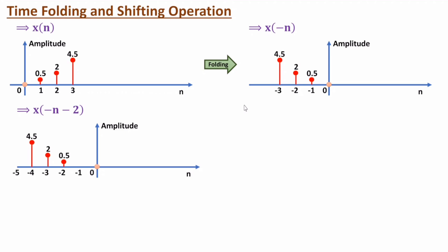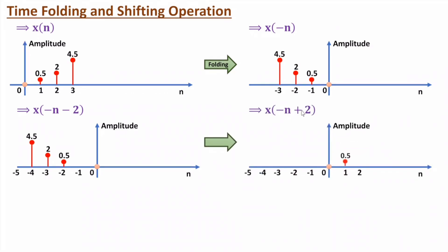For x(-n + 2), you forward the folded signal by two elements in this direction. So always remember: for x(-n - 2) or similar expressions, first perform the folding operation. After folding, if there is minus two, shift the signal by two elements in the backward direction. If you have x(-n + 2), shift the folded signal in the forward direction by two elements. Be careful when performing this operation.